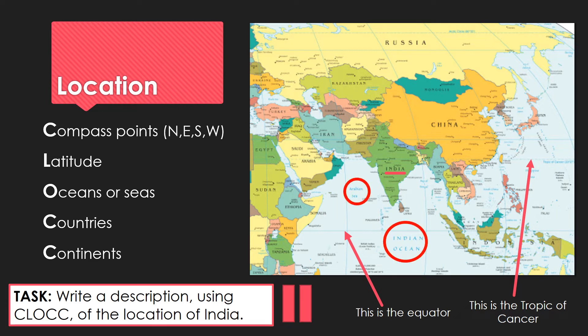Definitely make sure you've included latitude — the equator is to the south of India and the Tropic of Cancer runs through towards the north. Hopefully you included some oceans and seas: the Indian Ocean is to the south, the Arabian Sea to the west. Countries nearby include China to the northeast, Pakistan to the northwest, and Sri Lanka to the south. And finally, the continent that India is in is Asia — make sure that's included. If you've missed any of those ideas, go back and improve your answer before moving on.